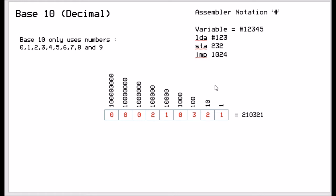Now in terms of assembler, the notation is hash, so if you put a hash in front of the number, the assembler would know that it's a decimal number. So for example, variable equals hash 12345, or LDA hash 123, or STA 232, or JMP 1024. Now these haven't got their hashes because if you don't put a hash in, the assembler automatically defaults to base 10.